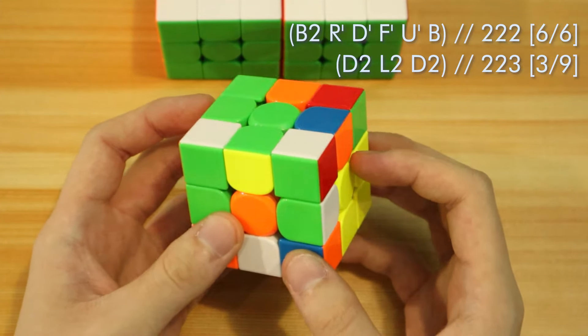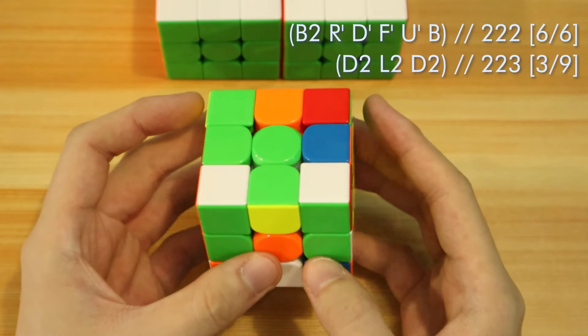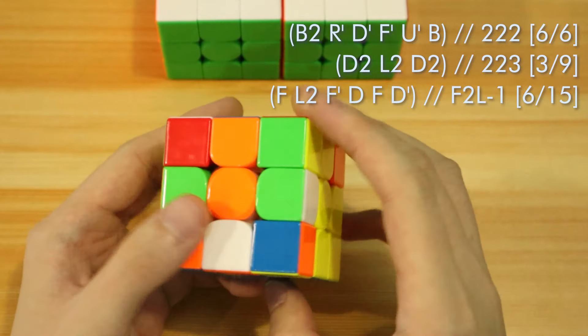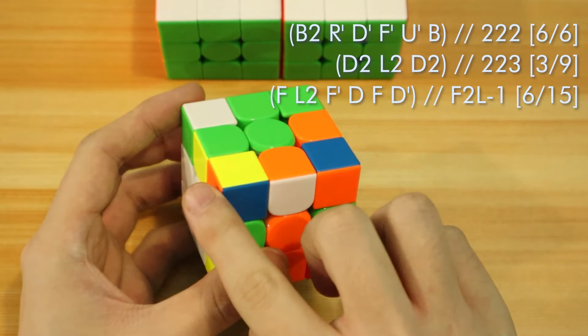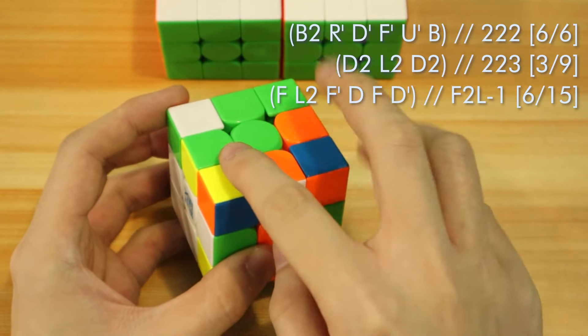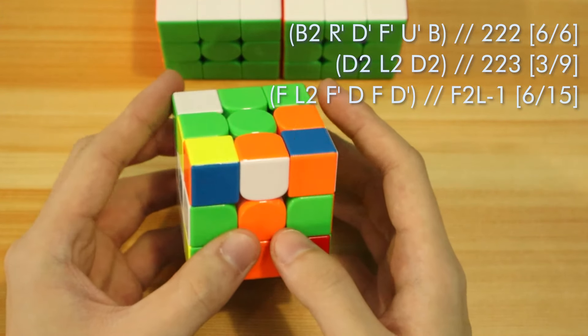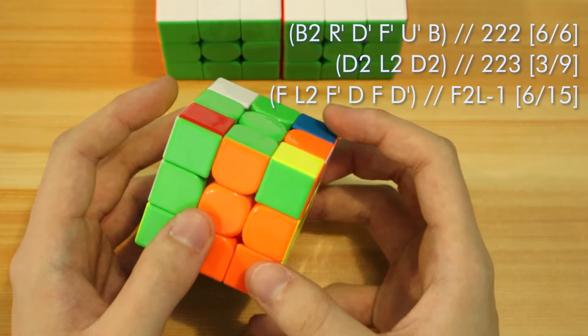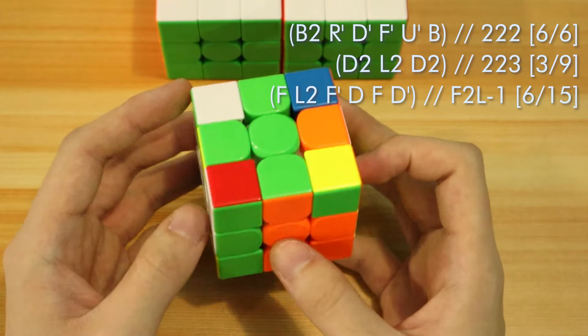Then from here, I first plan to insert this orange edge. And as I did that, I realized that these two pieces connect to a 3-move insert. So that adds additional 6 moves to a 15-move F2L-1.